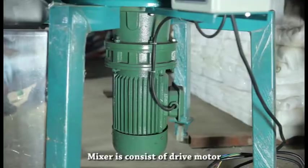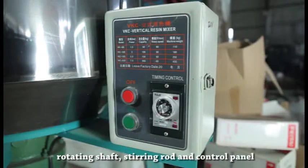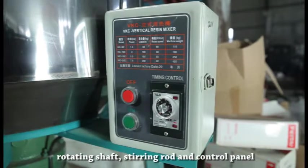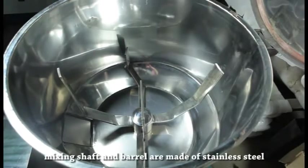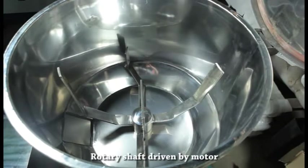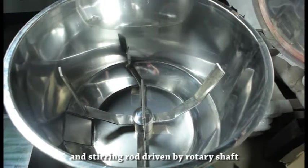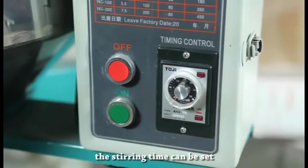The mixer consists of a drive motor, rotating shaft, stirring rod, and control panel. The mixing shaft and barrel are made of stainless steel. The rotary shaft is driven by motor and stirring rod driven by rotary shaft. The stirring time can be set.